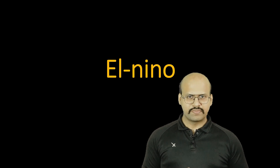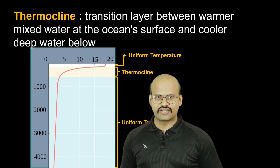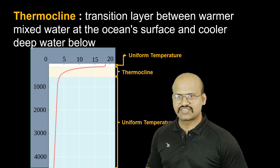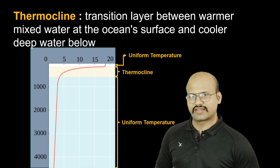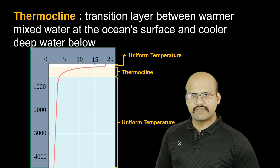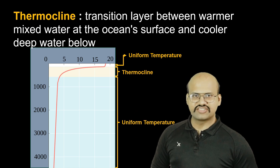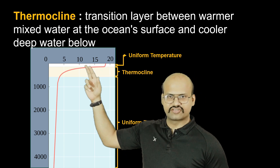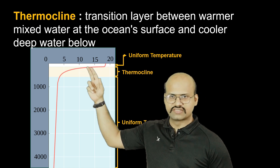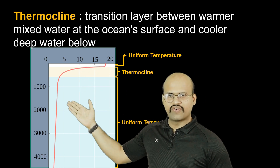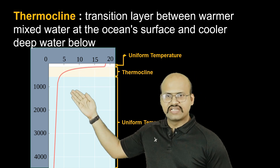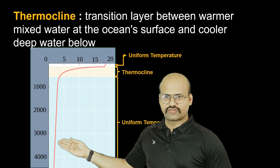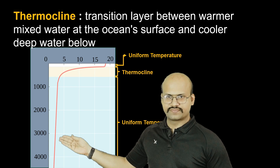Before looking into El Niño, let's discuss the thermocline. The thermocline is a transition layer between the warmer waters at the surface of our oceans and the cooler waters at the deeper parts of our oceans.